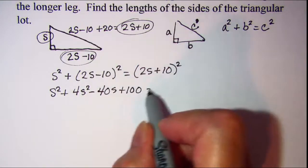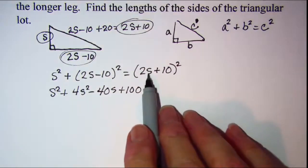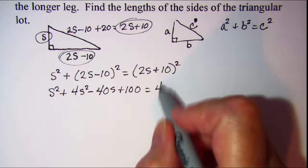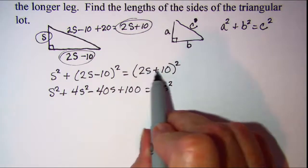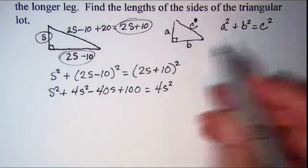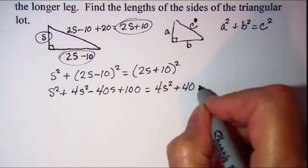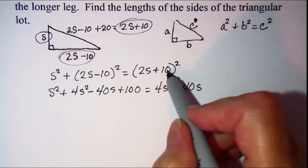And then on the right side when I square this binomial, I'll have 4s squared, and then 2s times 10 is 20s, doubled is 40s, and then plus 100.